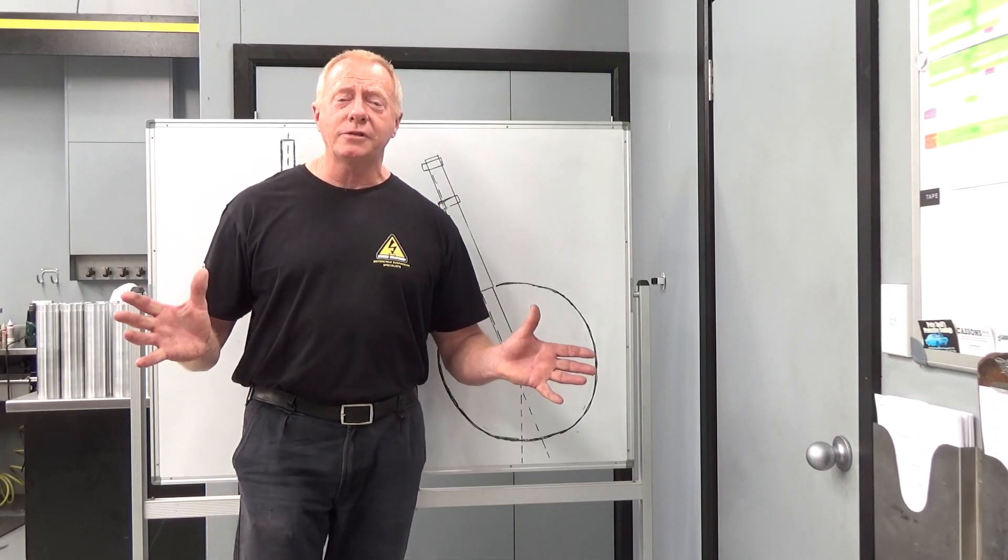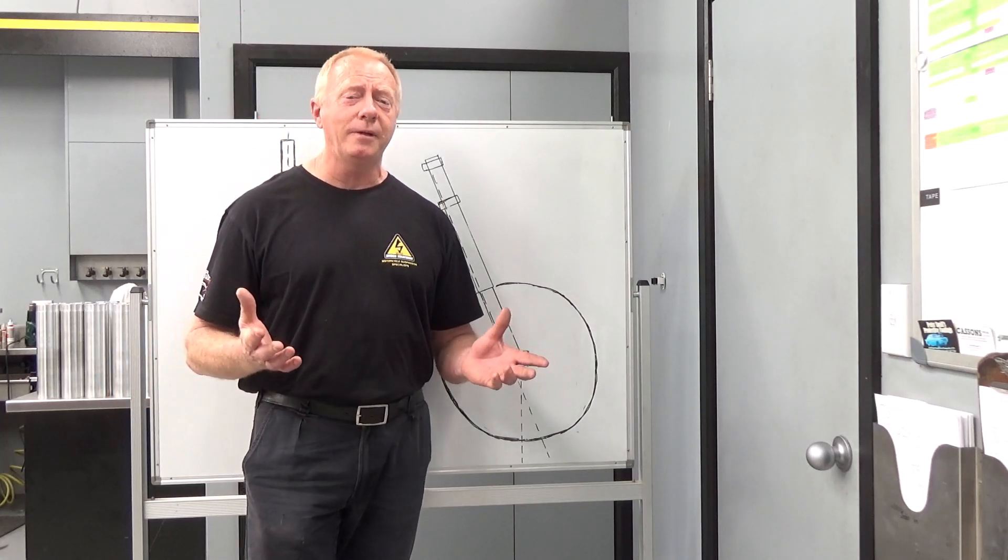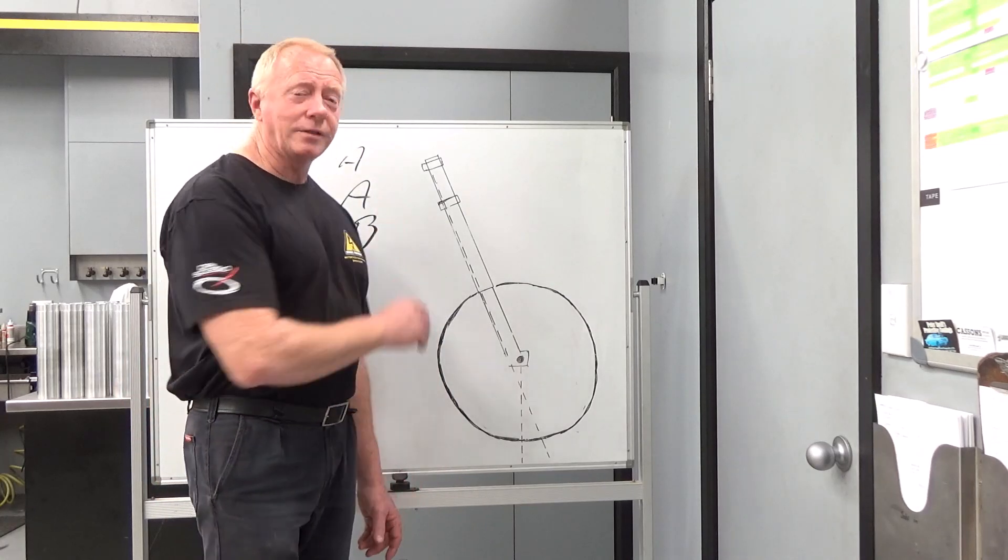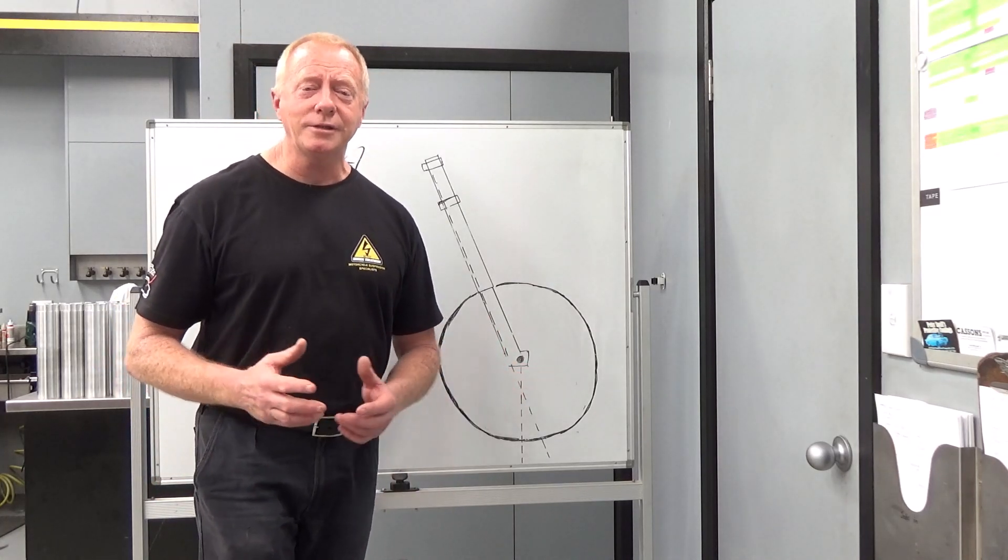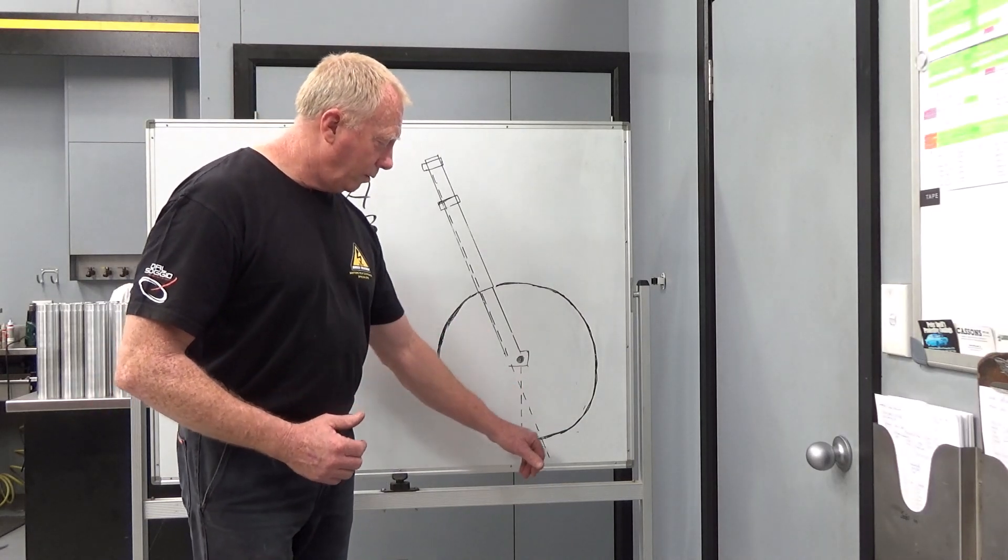So we've seen how steering and cornering develops within a boat. Does the same thing happen in a bike? Yeah, it does. And so instead of having a tiller arm, we'll actually have a set of handlebars, and instead of having a rudder, in our case, we have what we call ground trail.